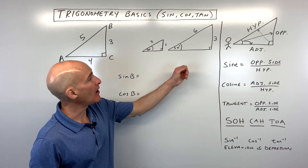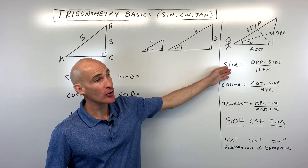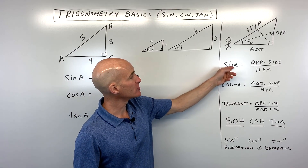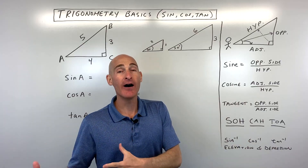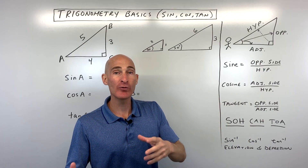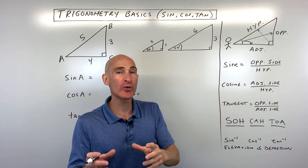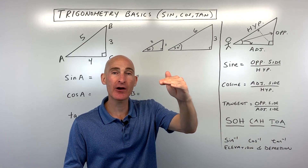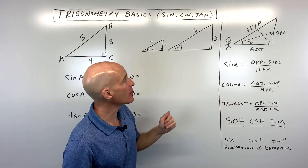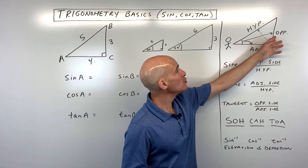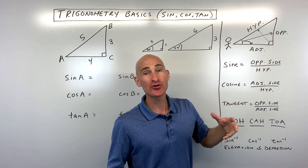So the first thing we want to talk about are the trig ratios, also referred to as the sine, cosine, and tangent of an angle. Now when we talk about a trig ratio, a ratio means you're comparing two quantities. And in this case, we're comparing two of the side lengths in a triangle.